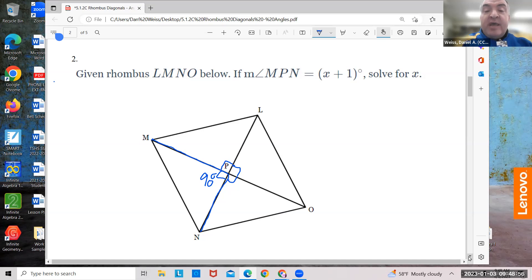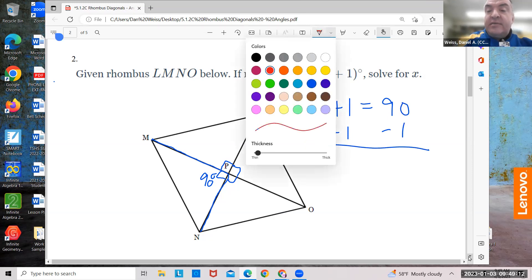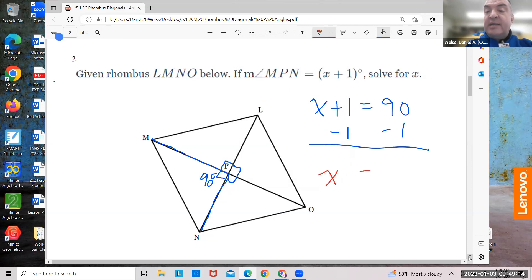So, now this becomes easy. If MPN equals X plus 1, that means X plus 1 equals 90. Minus 1 from both sides, and your answer is 89. Done. Easy.